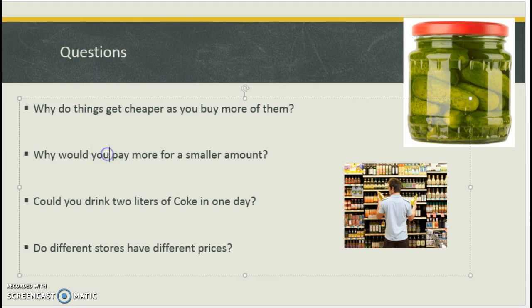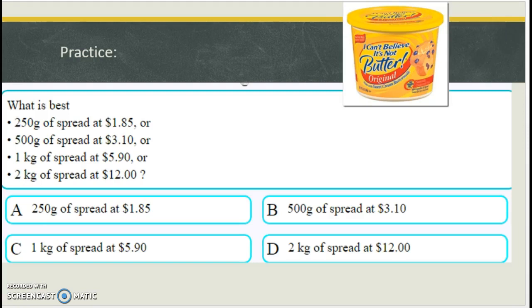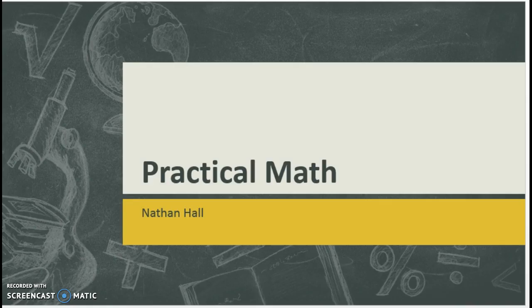And some questions we'll look at. Why do things get cheaper as you buy more of them? Why would you pay more for a smaller amount? Well, another question there. About two liter of Coke's the best bargain. You really want to walk around with two liters of Coke? Can you drink two liters of Coke? If so, you are a stronger person than I. And different stores, different prices. So a lot of shopping you can do. This will come up in personal finance and home and family economics. That's why we're doing it here.